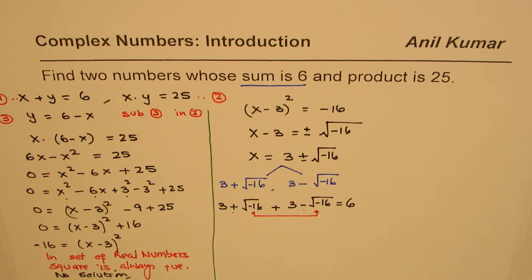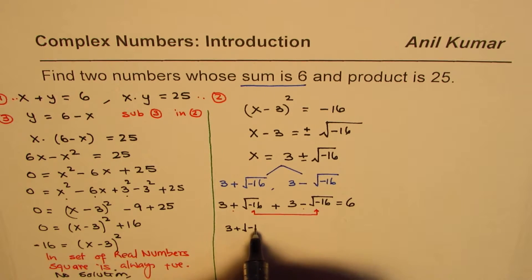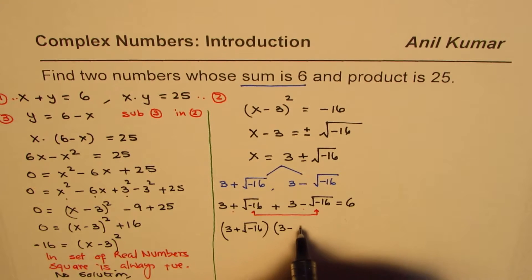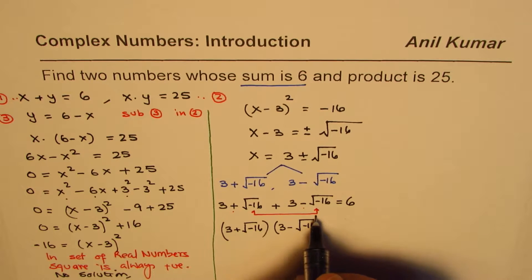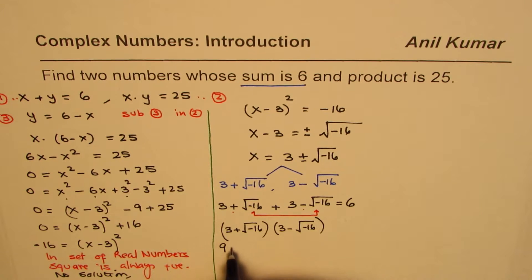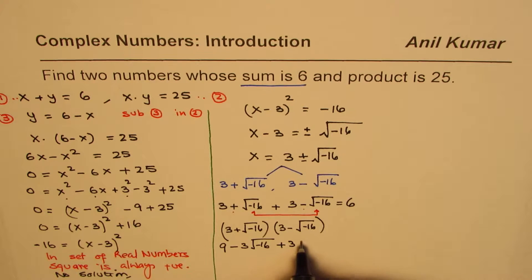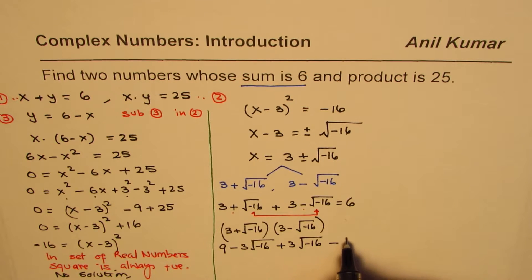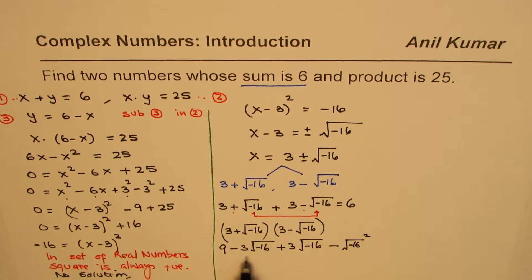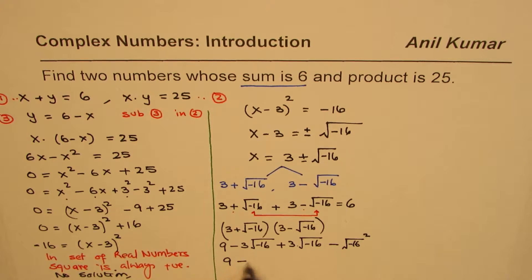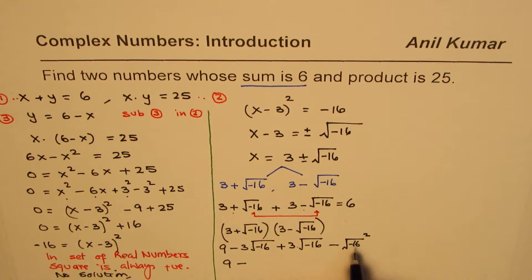Now let's multiply these two numbers: (3 plus √(−16)) times (3 minus √(−16)). We get 3 times 3 as 9, then minus 3√(−16) and plus 3√(−16) — those two cancel out. Then we multiply √(−16) times √(−16), which gives the square of √(−16).